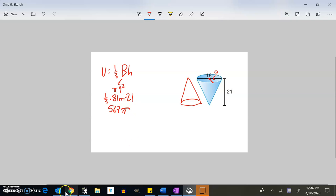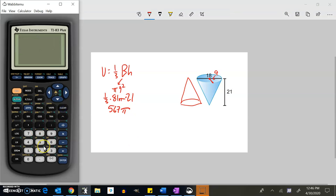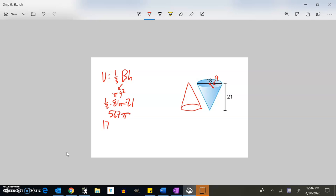And let me get a decimal approximation for that. You could go straight from the 567. If you want to do it on your calculator straightaway, just go one-third times 81. Or you could even go times 9 squared times pi times 21. And that will give us our volume. Remember, that volume is in cubic units. So 1781.28. And that is units cubed. So there's our volume.